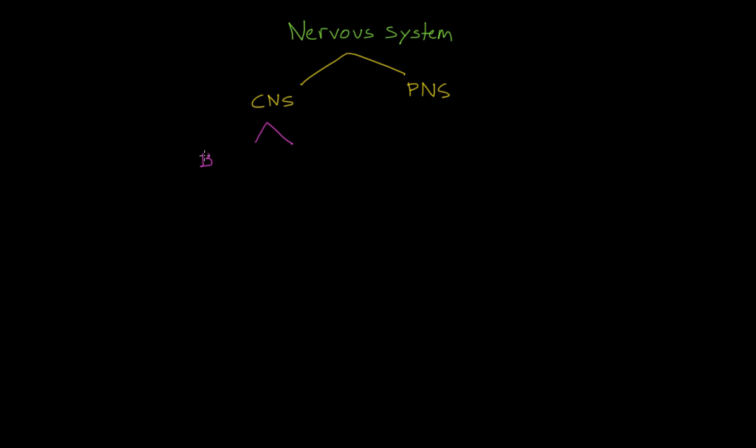The central nervous system can be broken down into two parts. The first is the brain, and the second is the spinal cord.